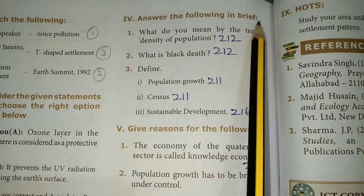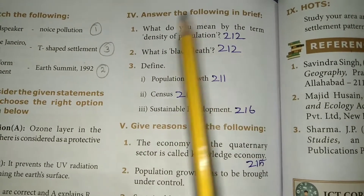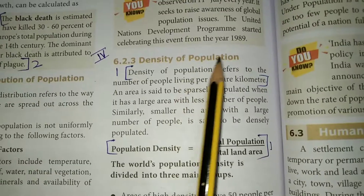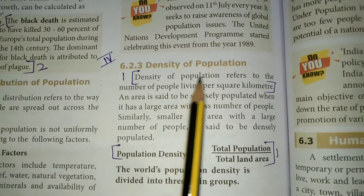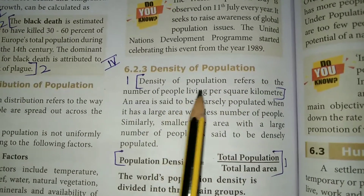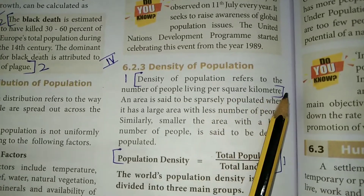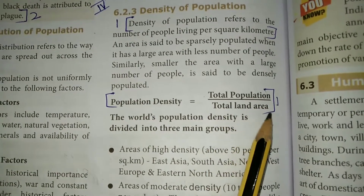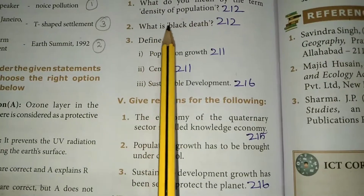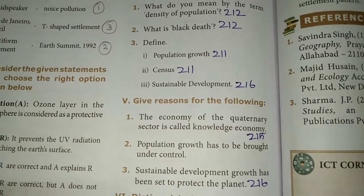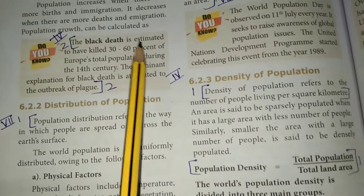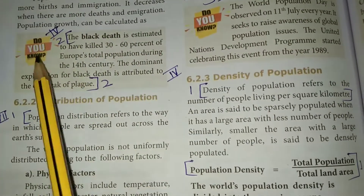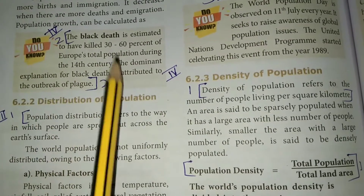Answer the following in brief. Question 1: What do you mean by the term density of population? Take page number 2. Density of population refers to the number of people living per square kilometer. Population density equals total population divided by total land area. Question 2: What is Black Death? Take page number 2.